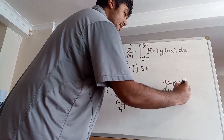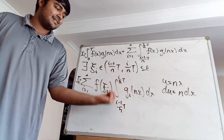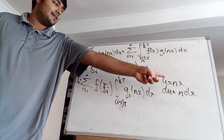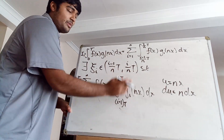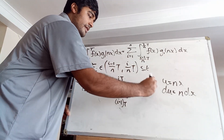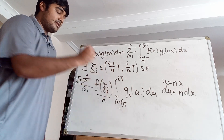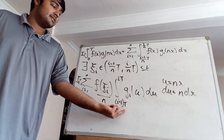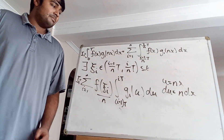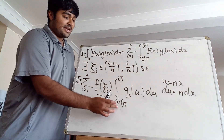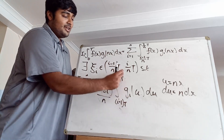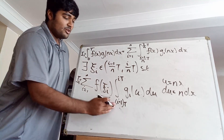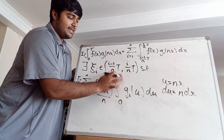This inner integral is quite nice because we can do a u-substitution: u = nx, so du = n dx. When x = (i−1)t/n, u = (i−1)t; when x = it/n, u = it. g1(nx) becomes g1(u) and dx becomes du/n, so we bring the 1/n out front. Then I1 equals the sum from i=1 to n of f(ψᵢ)/n times the integral from (i−1)t to it of g1(u) du. Now we use the fact that g1 is t-periodic: the interval (i−1)t to it has length t, so we can replace it with any interval of length t — we choose 0 to t.